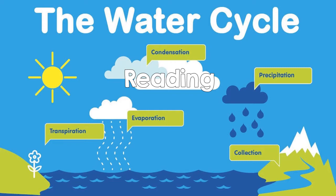The water cycle is the movement of water in the environment by evaporation, condensation, and precipitation.